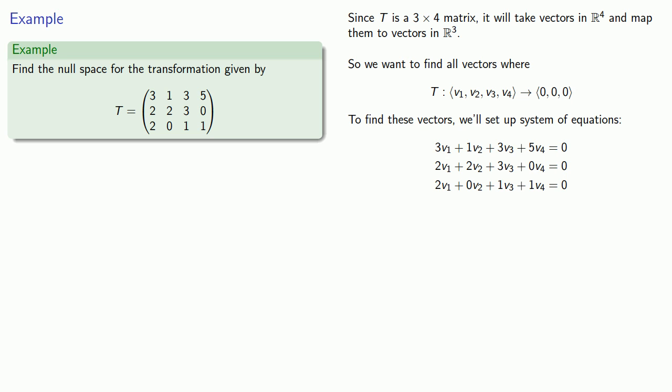Since the constants are all zero, I can just record the coefficient matrix alone and row reduce that.